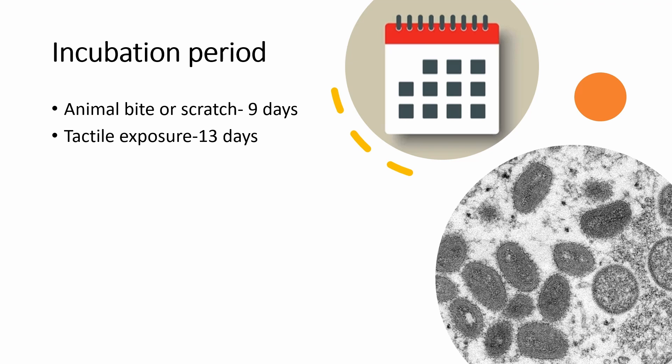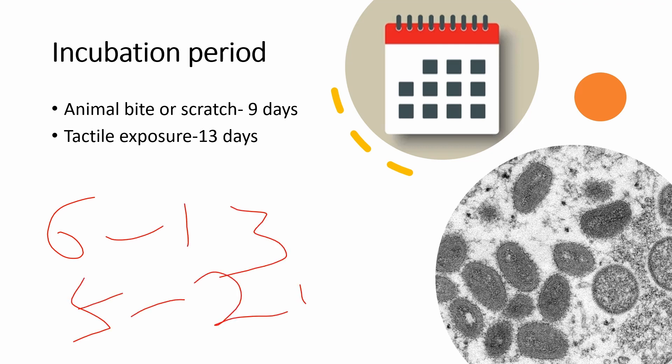The classical incubation period is usually 6 to 13 days, but it can range from 5 to 21 days. The incubation period depends on the mode of transmission: for biting or scratching, it will be shorter compared to other types of exposure, like touching the lesions or clothing of an infected person.